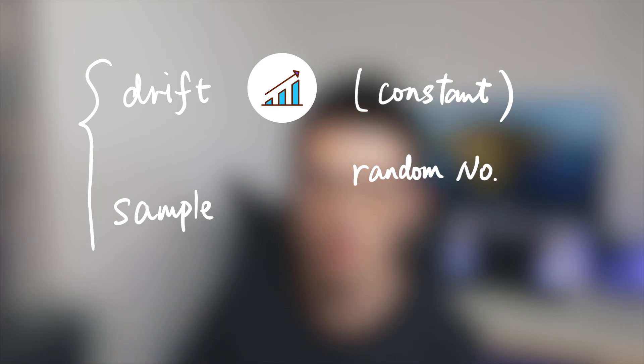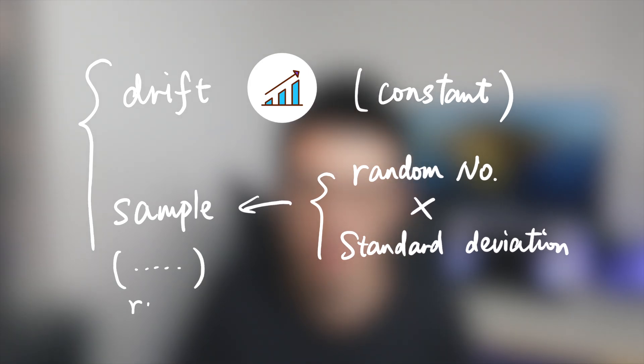Monte Carlo method can be divided into two parts. The first one is called drift, which is generated from historical data, and is a constant. Another part is called sample. Basically we have to create a random number, then we multiply this random number with the standard deviation from the drift in order to get the sample. Actually, if the sample is restricted to a range, it's really important for speeding up the simulation process, and I will introduce in the next section.